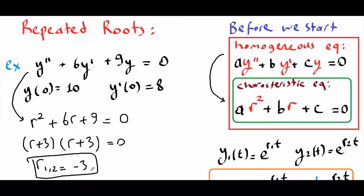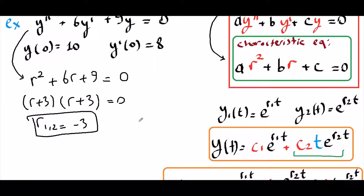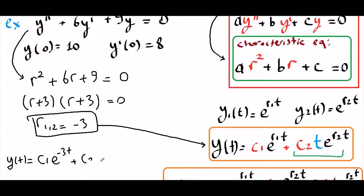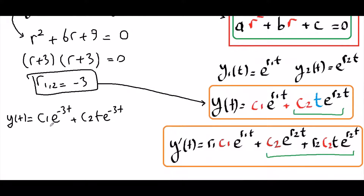Now we know our r1 and r2, which we can plug into our general solution. So y(t) = c1·e^(-3t) + c2·t·e^(-3t). In this general solution, we can now apply the first initial condition y(0) = 10.